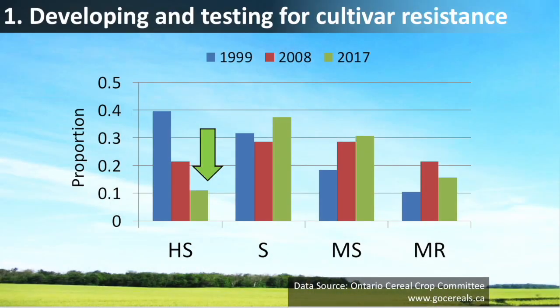In 1996 and 1997, looking at cultivar resistance, 40% of the cultivars available tested highly susceptible to Fusarium head blight, and only less than 1% tested moderately resistant. But today, from 2017 to 2020, we have 40% of our cultivars in the moderately resistant category and only 10% highly susceptible. The progress in plant breeding, thanks to plant breeders and the Ontario Cereal Crop Committee, has been tremendous since 1996.